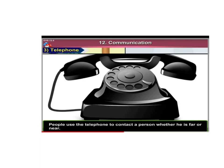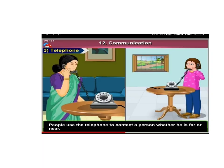The third source of communication is the telephone. People use the telephone to contact a person whether he is far or near. Communication has gone through a revolution — changes have come. First letters were sent, then telegrams, but the telephone has made communication very easy. Through telephone we can contact our friends, relatives, and colleagues in seconds, no matter where they are.